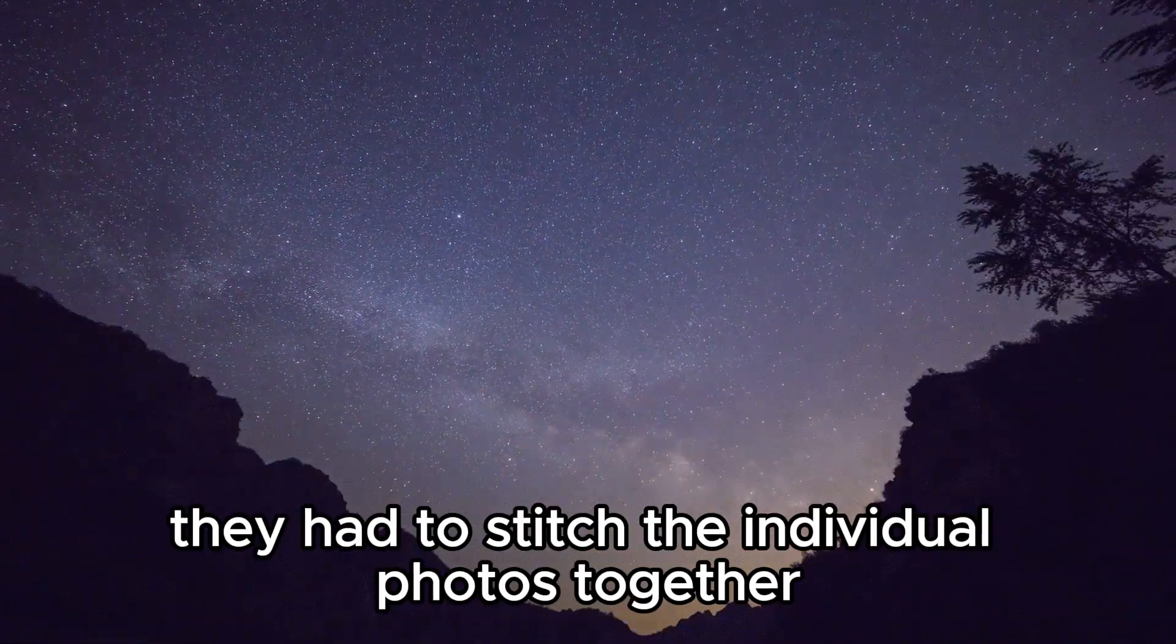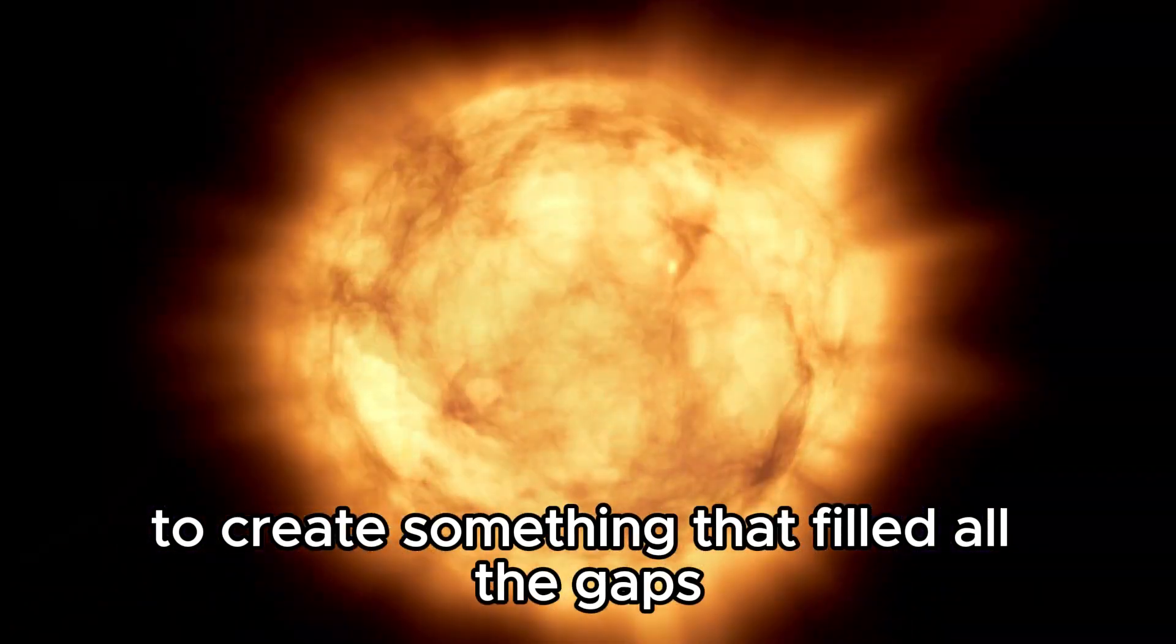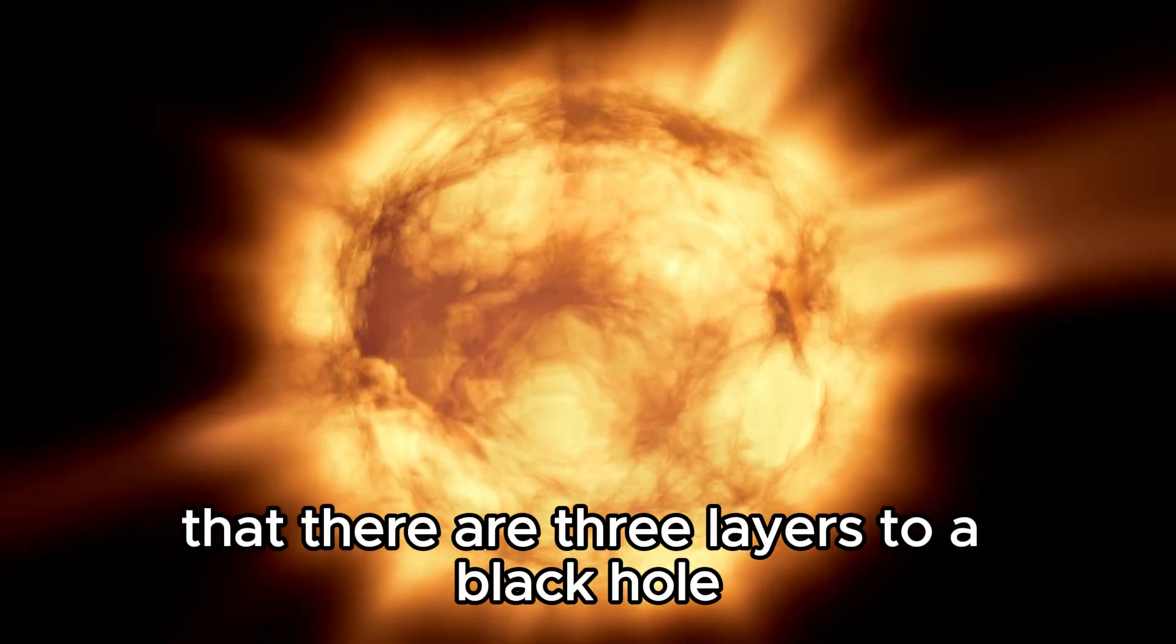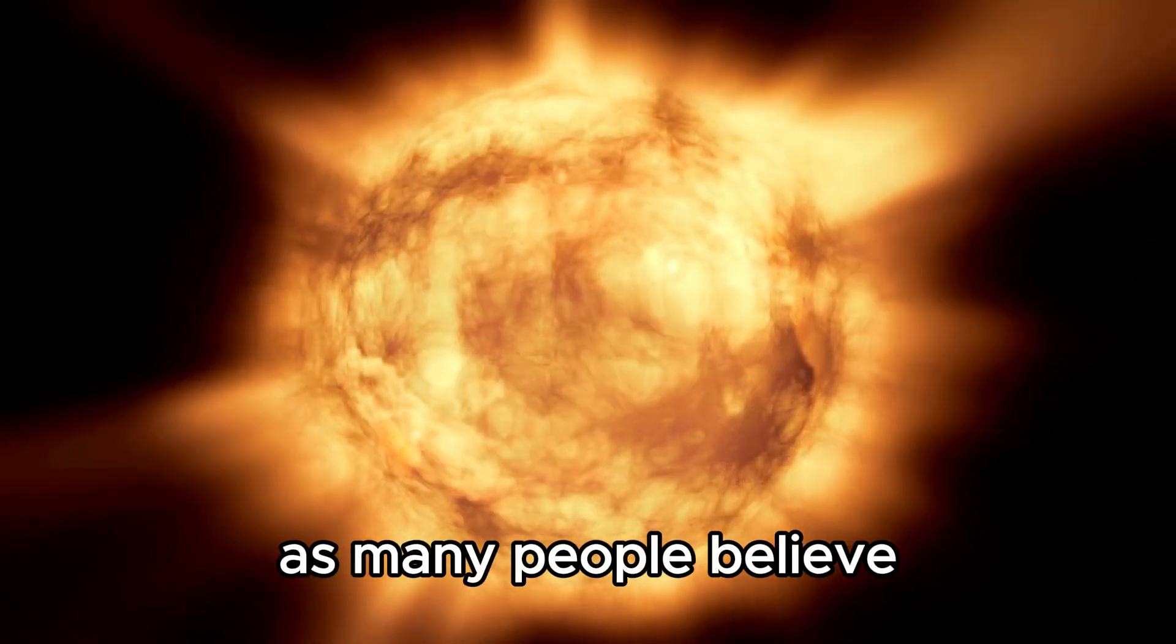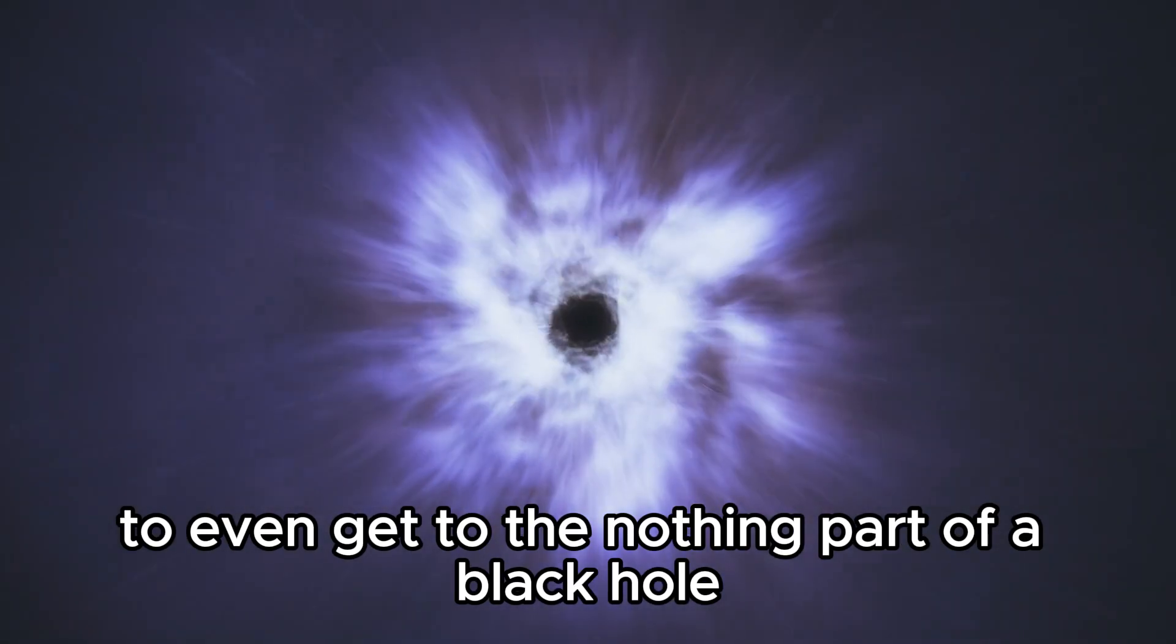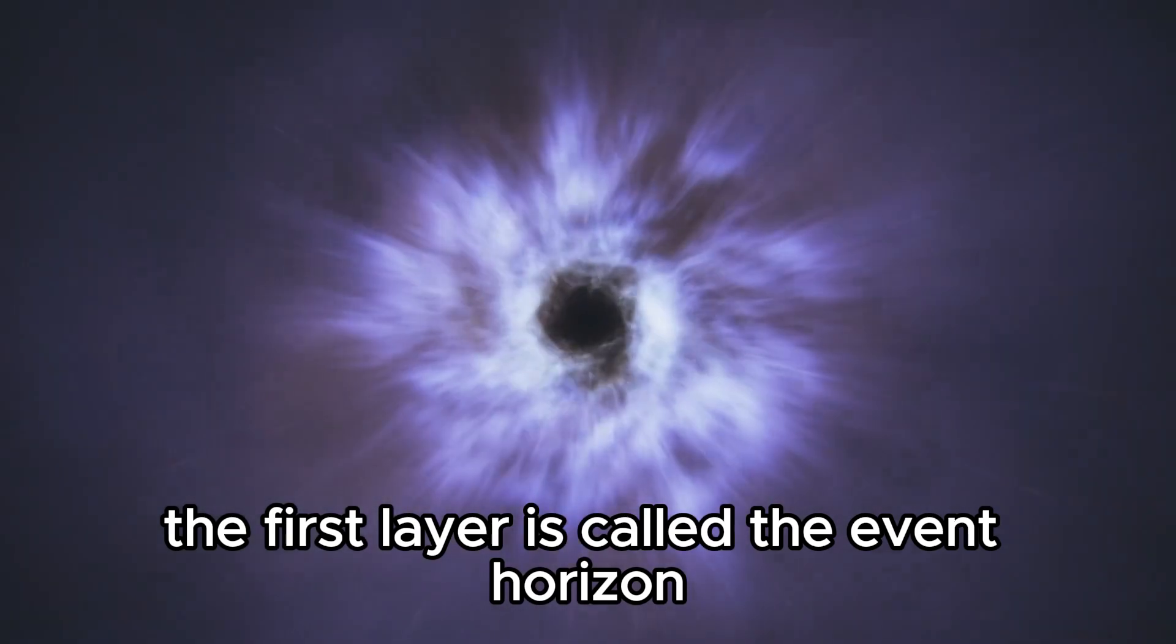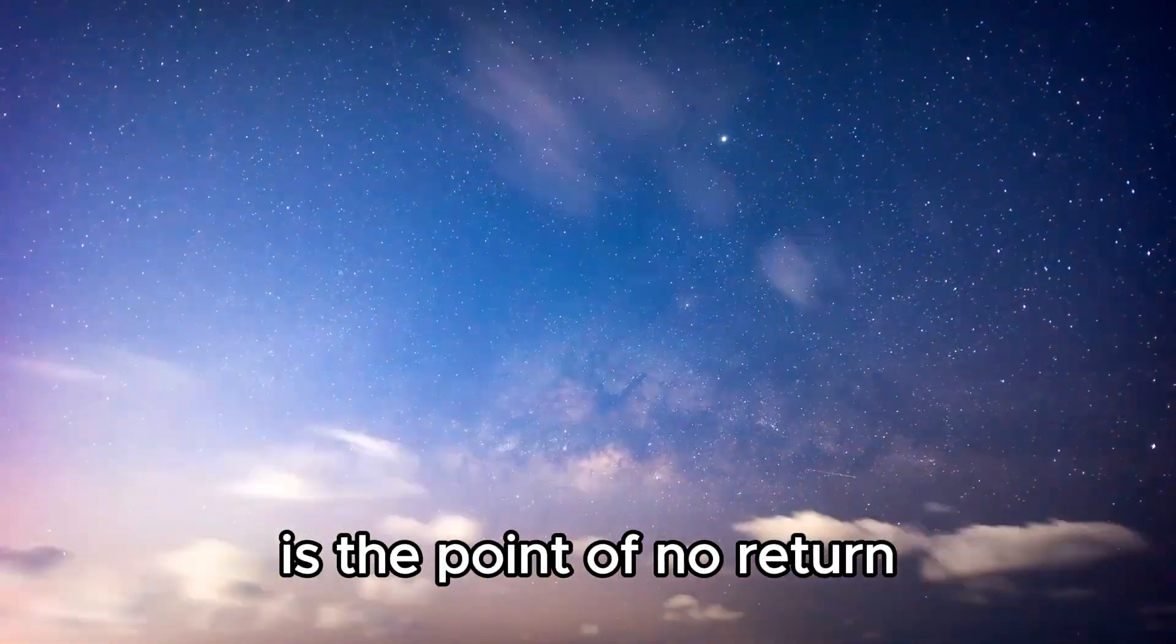They had to stitch the individual photos together to create something that filled all the gaps. This way, they were able to figure out that there are three layers to a black hole. It's not just one single gaping hole of nothingness as many people believe. Things are a lot more complicated than that. To even get to the nothing part of a black hole, you have to make it through the first two layers. The first layer is called the event horizon, which is the point of no return. Once you pass the event horizon, there's no turning back, and you will be sucked into the black hole.